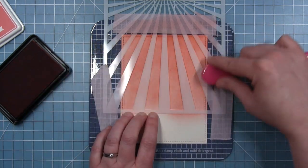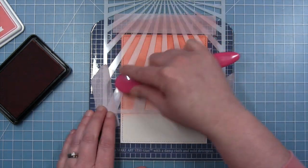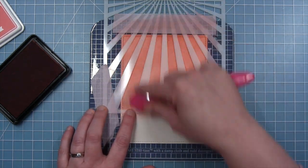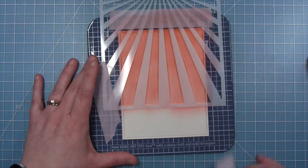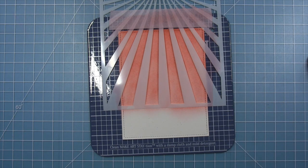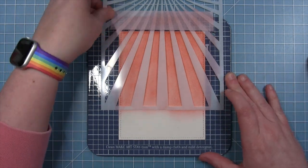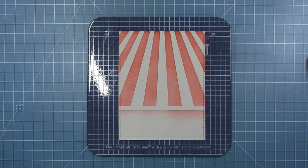It doesn't matter that I'm going off the bottom of the stencil at the bottom because as I said before, that is going to get covered up with some cardstock. So I don't need to worry too much about going off the edge of the stencil. So when I pull this away, you'll see I have these really fun circus tent stripes.